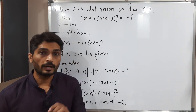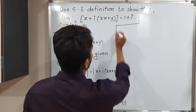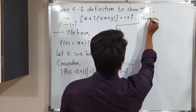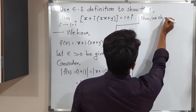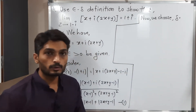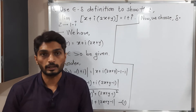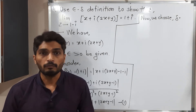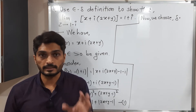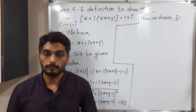Now we have to choose delta. We choose delta equal to — right now we don't know what delta should be, so I'm keeping it blank. We will go further, and after solving a few steps we will realize which delta to select.